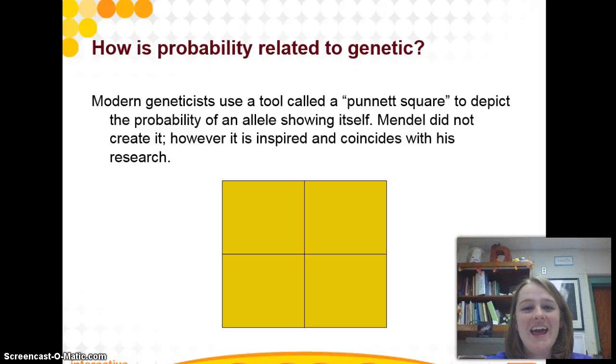Hello again, and as promised, here is the tool of science. It's beautiful. It is a square divided into four equal squares known as the Punnett square. And who do you think invented it?